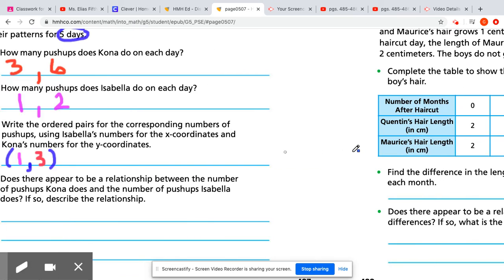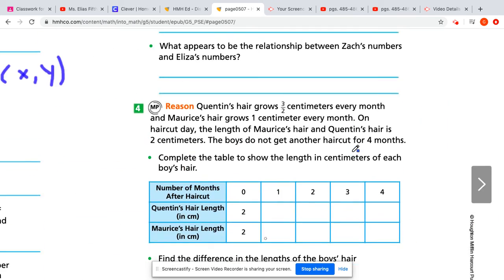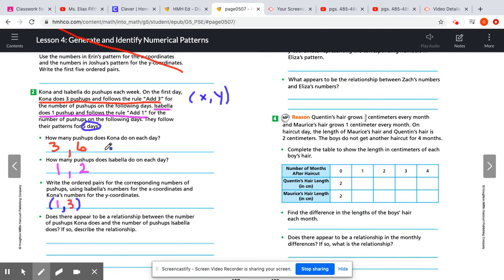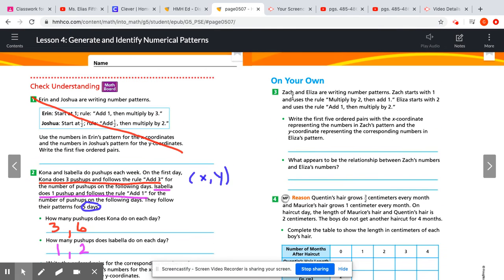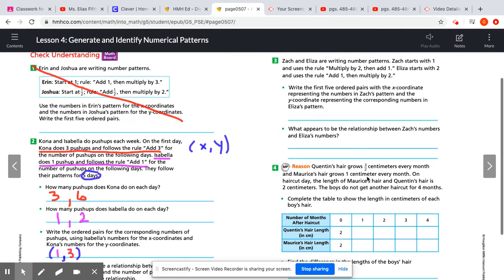And then I want you to talk about the relationship between the two datas between Kona's and Isabella's. Okay. Then over here, we have the same thing going on for Zach and Eliza. You're going to do the same exact thing for them.